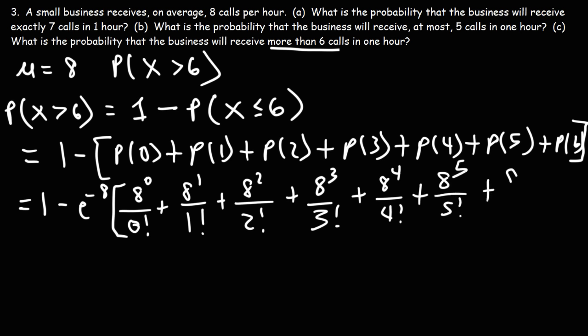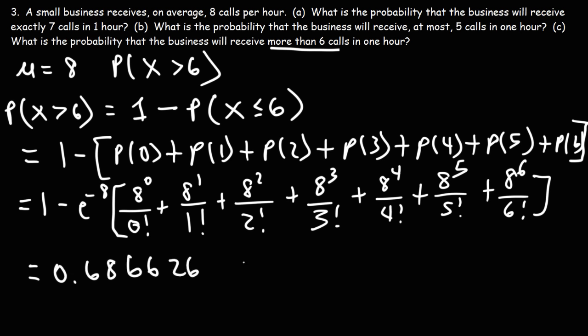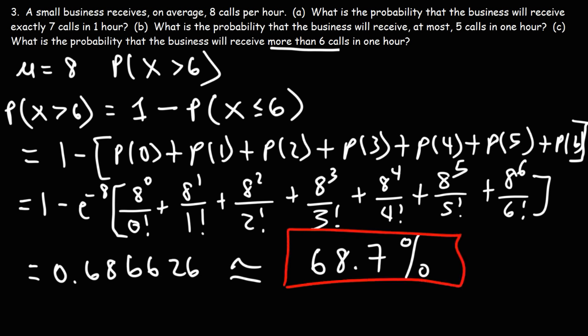Go ahead and type this into your scientific calculator. The result is 0.686626, so there's approximately a 68.7% chance that the business will receive more than 6 calls in one hour. This makes sense because the average is 8 — more than likely the business will receive more than 6 calls, since the mean itself is 8.